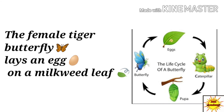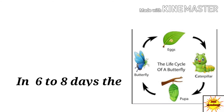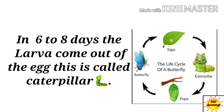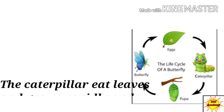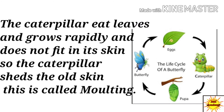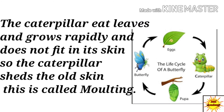The female tiger butterfly lays an egg on a milkweed leaf. In six to eight days, the larva comes out of the egg — this is called the caterpillar. The caterpillar eats leaves and grows rapidly and does not fit in its skin, so the caterpillar sheds the old skin. This is called moulting.